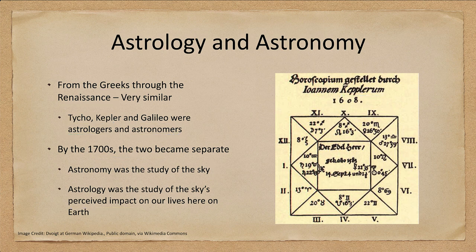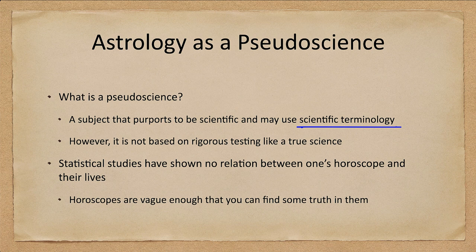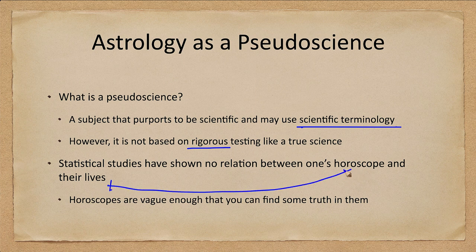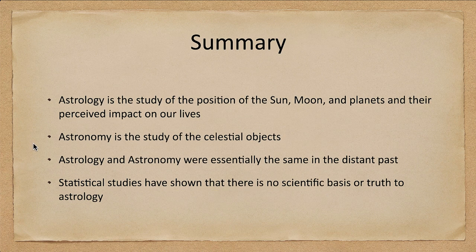In reality, astrology has become a pseudo-science — something that purports to be scientific and uses scientific terminology such as retrograde motion or conjunction as significant for astrological prediction. However, it is not based on rigorous testing like a true science. Studies have shown that there is no relationship between a horoscope and people's lives. Horoscopes are simply vague enough that people will find some truth in them.